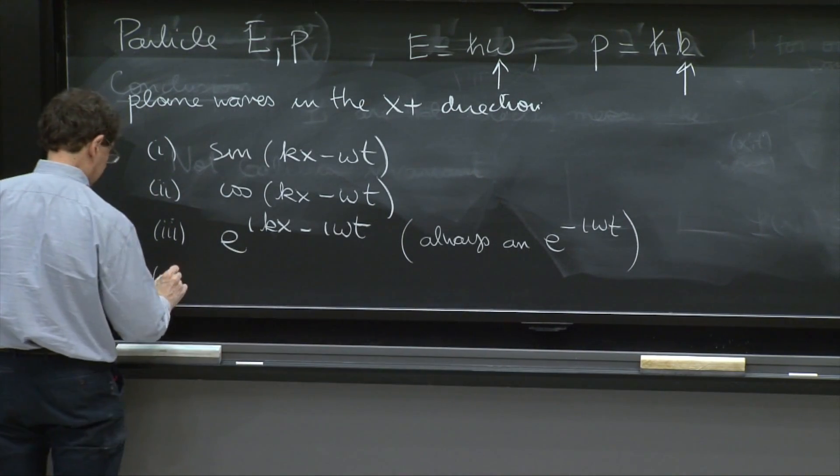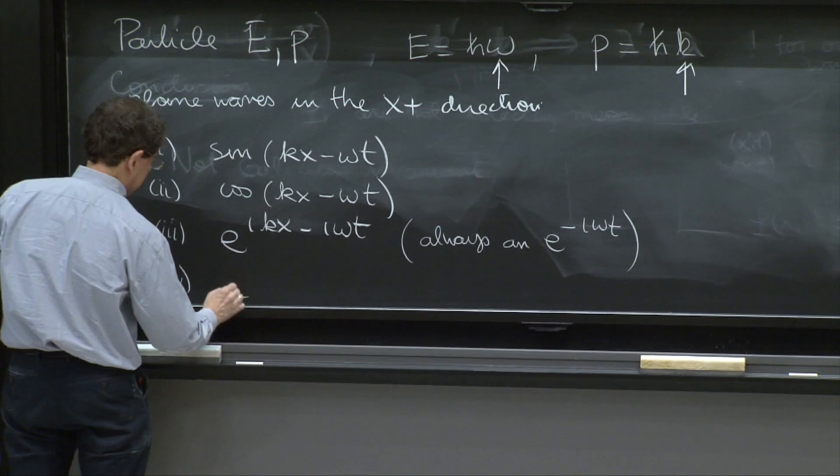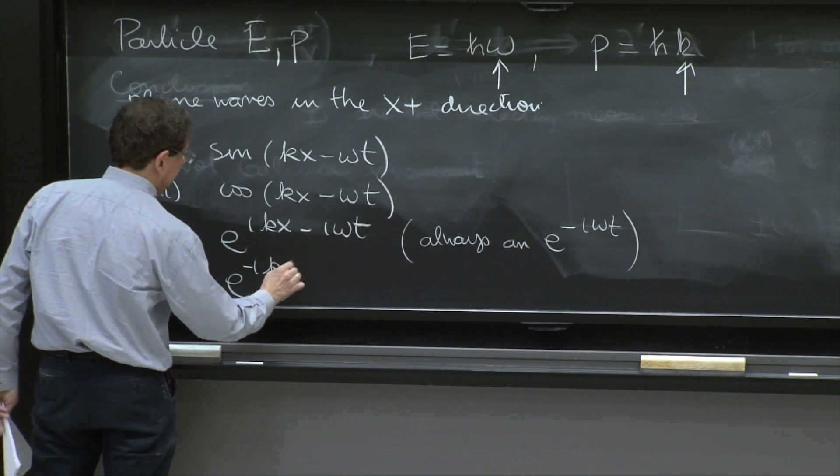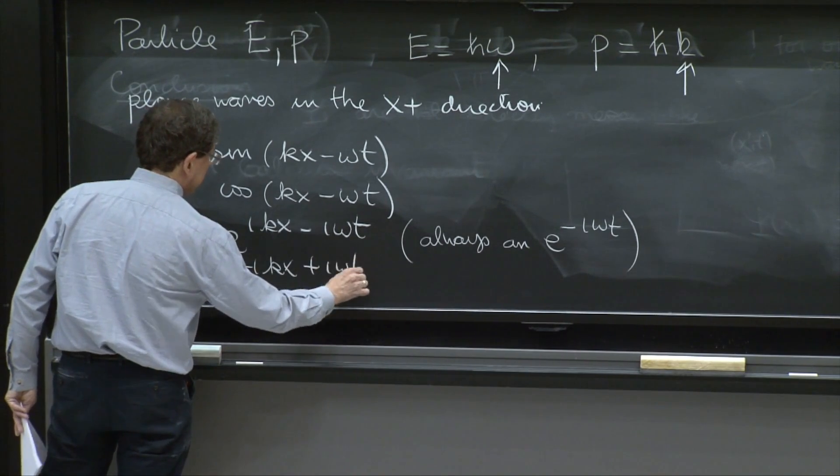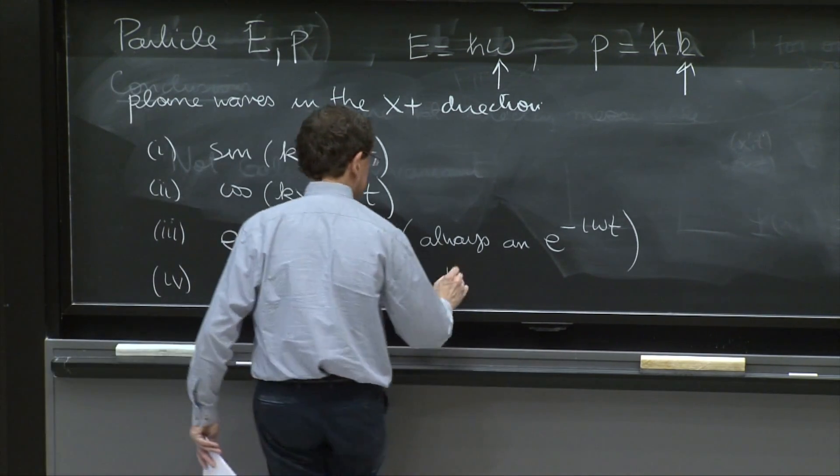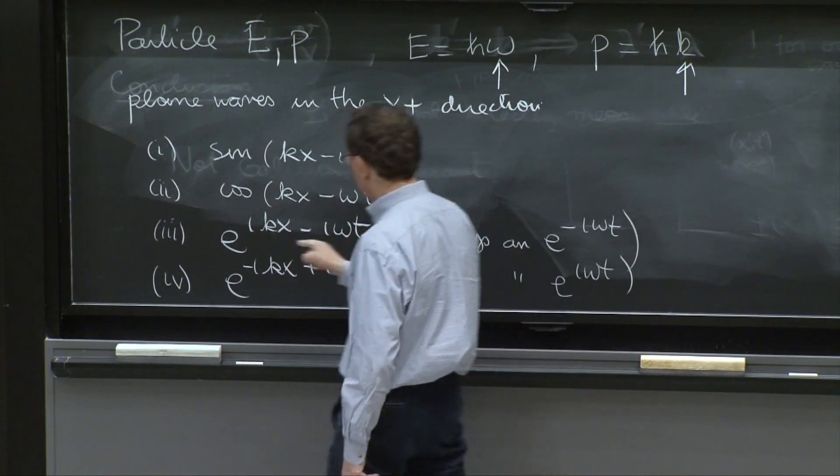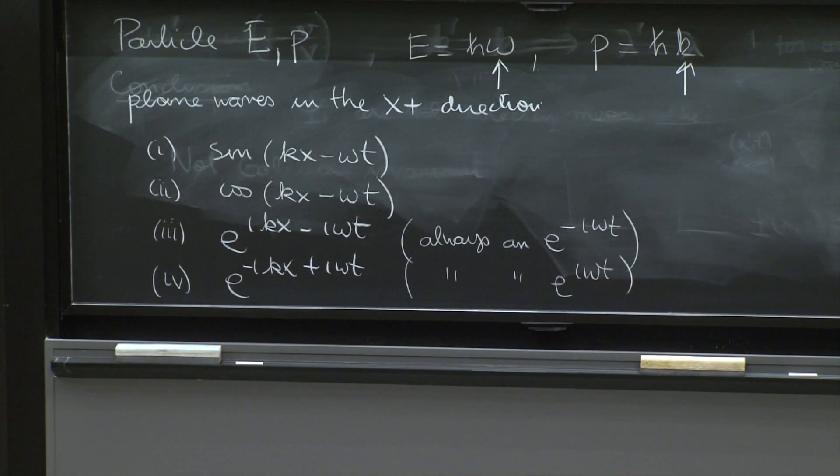Or maybe it's the other way around. It's e to the minus ikx plus i omega t. So always an e to the i omega t. And then you have to change the sign of the first term in order to get a wave that is moving that way.